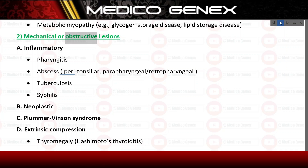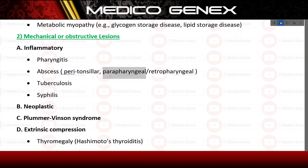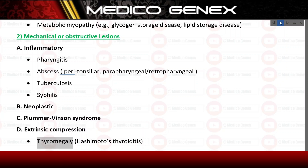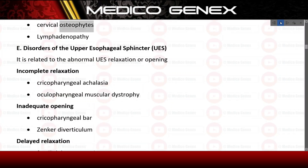The second cause of oropharyngeal dysphagia is mechanical or obstructive lesions. A) Inflammatory — pharyngitis, abscess (peritonsillar, parapharyngeal, retropharyngeal), tuberculosis, and syphilis. B) Neoplastic. C) Plummer-Vinson syndrome. D) Extrinsic compression — thyromegaly, Hashimoto's thyroiditis, cervical osteophytes, and lymphadenopathy.